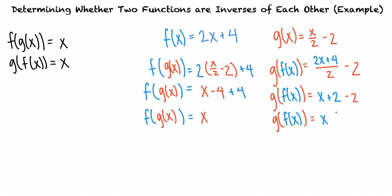So when determining whether two functions are inverses of each other, we need to first find the compositions of the two functions. If both of the compositions equal positive x, then the two functions are inverses of each other. If the compositions equal anything other than positive x, the two functions are not inverses of each other.